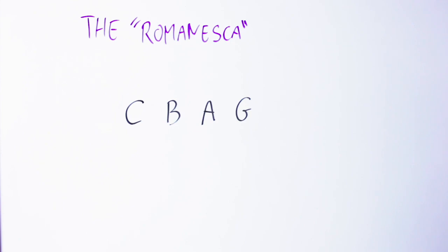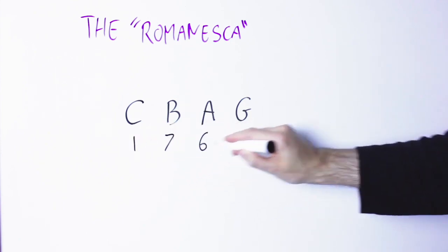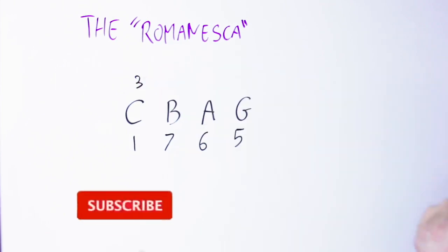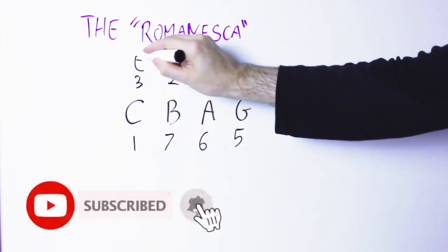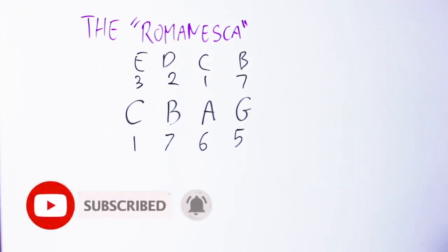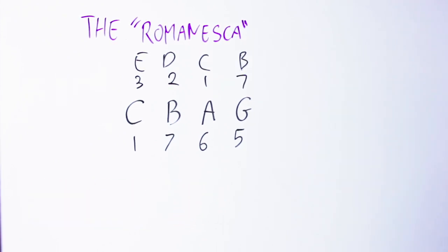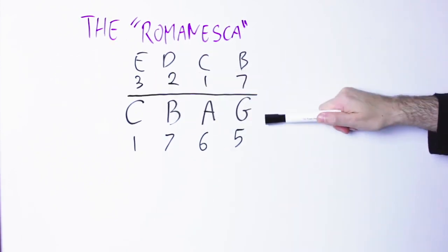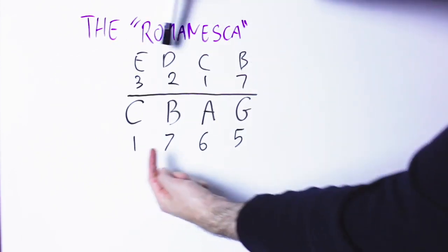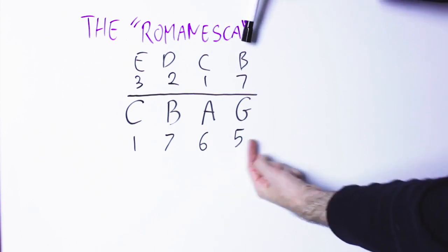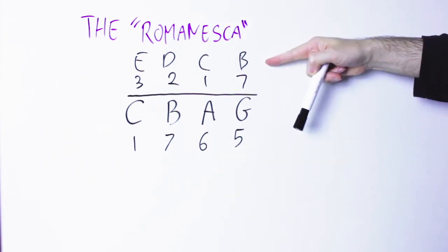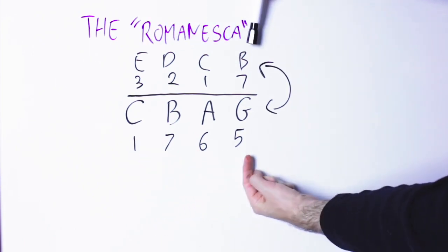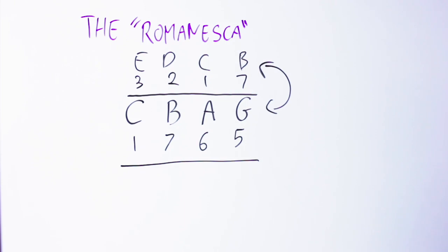Now let's harmonize these in thirds. On top of this scale made by degrees 1, 7, 6, 5, I'm going to play a second line made by degrees 3, 2, 1, 7 — so in C: E, D, C, A. If I play this line above that line, I have this sound. If instead I play this line above this other line, I have this other sound. This is the backbone of the Romanesca.